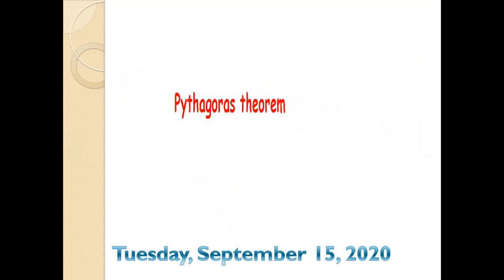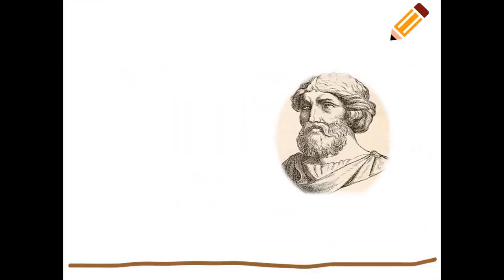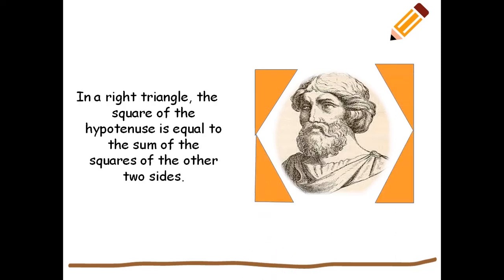Pythagoras Theorem. You can see the great mathematician Pythagoras, and let us pay tributes to him with right-angled triangles first. In a right triangle, the square of the hypotenuse is equal to the sum of squares of the other two sides. This is the Pythagoras Theorem.